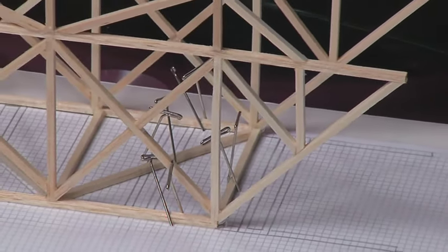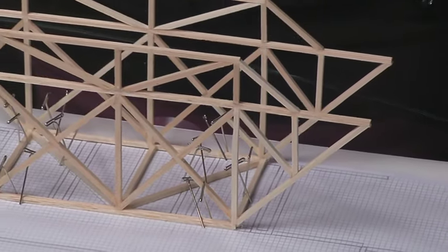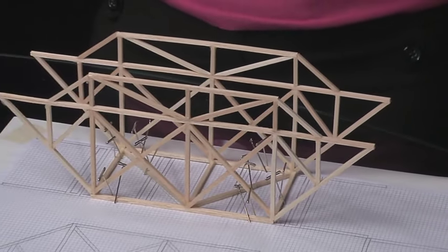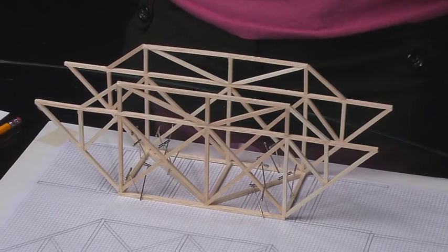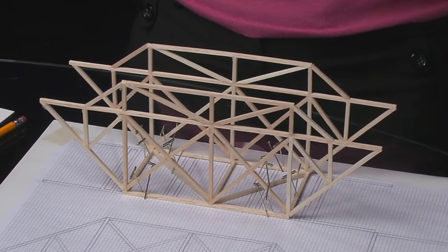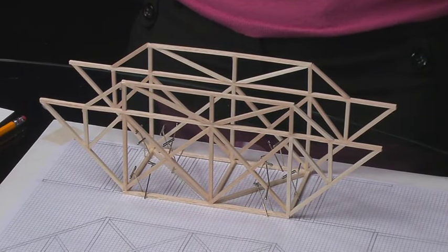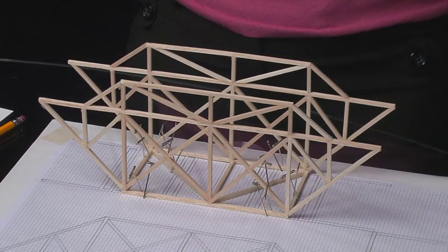For the next step, add glue to the other end of the braces and pin up the other side parallel to the first side. Make sure all the pieces fit together squarely and are not loose. Allow the glue to dry.